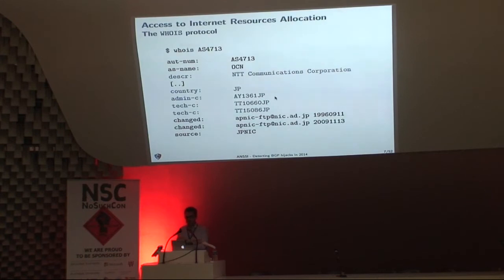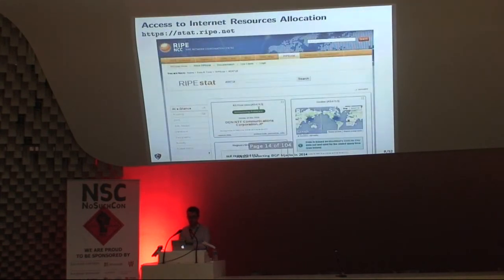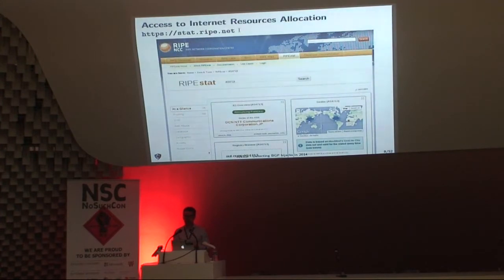You can access these internet resources by using the WHOIS protocol. Here on the screen we are trying to retrieve information related to Autonomous System 4713. We can see that this entity — a Japanese operator — is mainly located in Japan. If you prefer using a web browser, you can access the same kind of information through the RIPE website, which also shows you the IP prefixes used by the autonomous system, along with administrative and technical contacts.